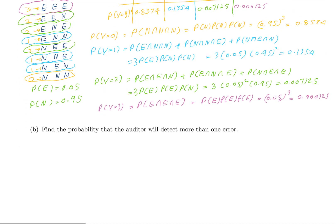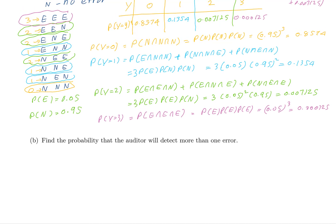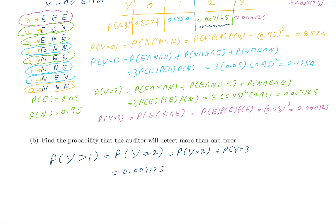Next, find the probability that the auditor will detect more than one error. Probability of y greater than 1, since this is discrete, means y greater than or equal to 2. So that is probability of y equals 2 plus probability of y equals 3, which is 0.007125 plus 0.000125, giving 0.00725. That is the probability that the auditor will detect more than one error.